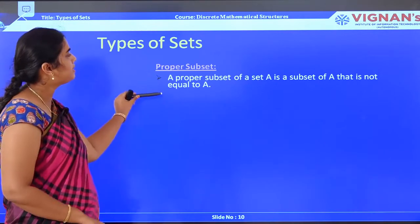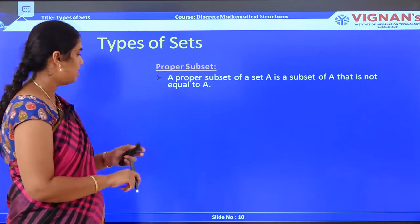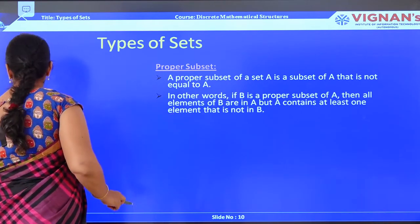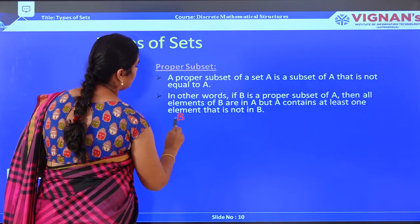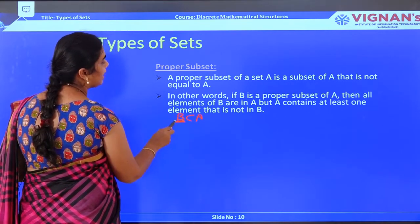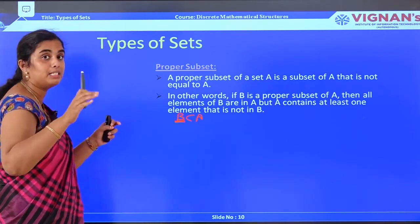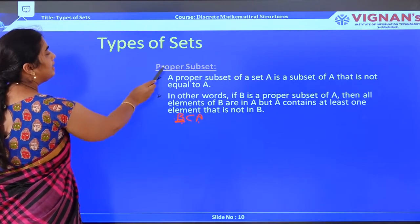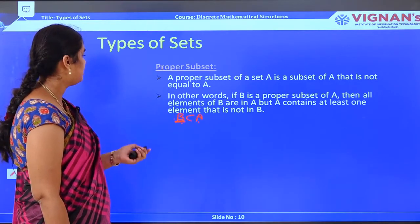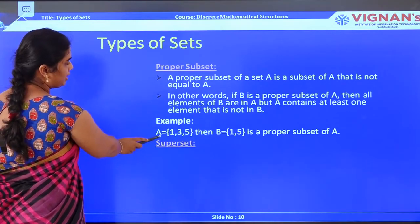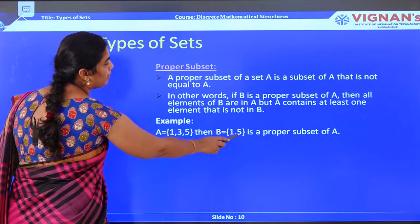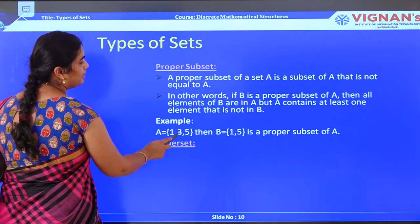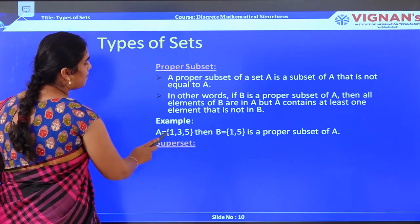Next is the proper subset. The proper subset of a set A is a subset that is not equal to A. In other words, if B is a proper subset of A, then B contains elements which are present in A but A contains at least one element not present in B. For example, if A = {1, 3, 5} and B = {1, 5}, then B is a proper subset of A because 3 is in A but not in B.